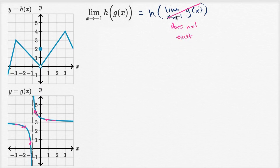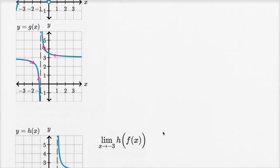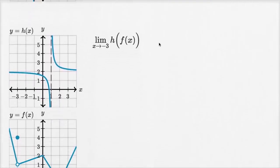So if the limit as x approaches negative one of g of x does not exist, there's no way we can evaluate this expression. We can't find h of 'does not exist.' So this entire limit does not exist.